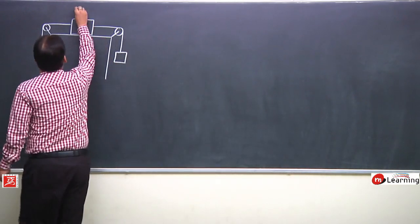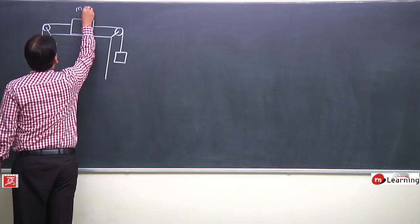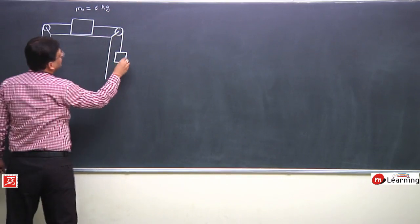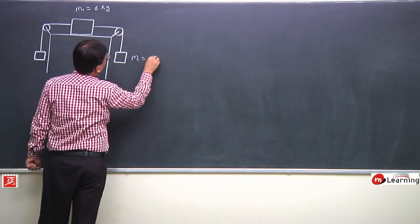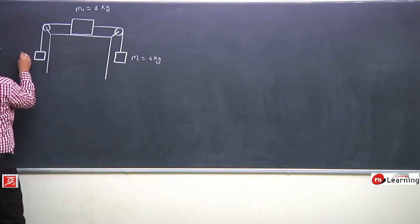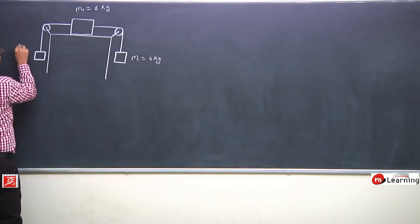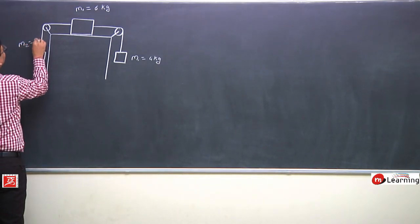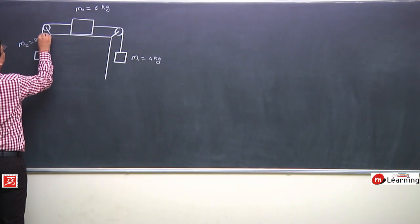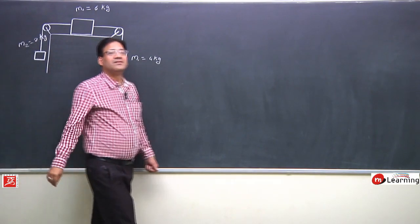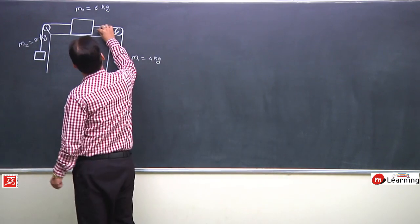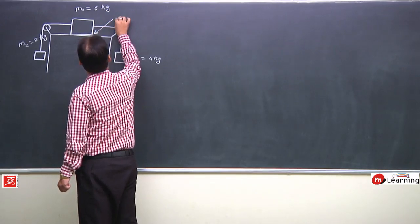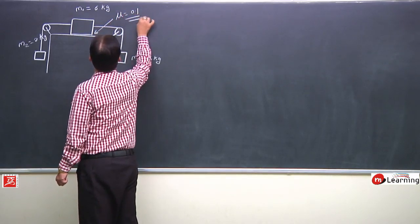This is mass M0 equal to 6 kg. This is mass M1 equal to 4 kg, and this is mass M2 equal to 2 kg. The coefficient of friction between this block and the table is 0.1.